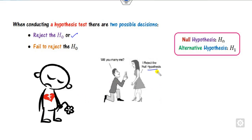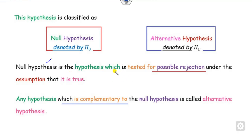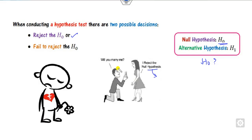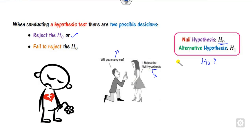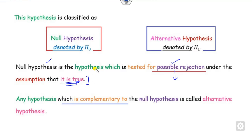So the question arises: they rejected the null hypothesis H0 — what is the meaning of H0? The null hypothesis H0 is the hypothesis which is tested for possible rejection under the assumption that it is true. It means that initially this man will believe that the beautiful girl will accept his proposal. That is their assumption — that she can accept his proposal — while the null hypothesis is tested for possible rejection. On the other hand, whatever is the opposite of this is called the alternative hypothesis H1.